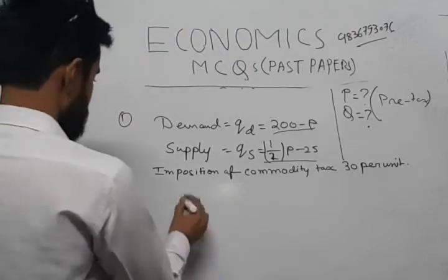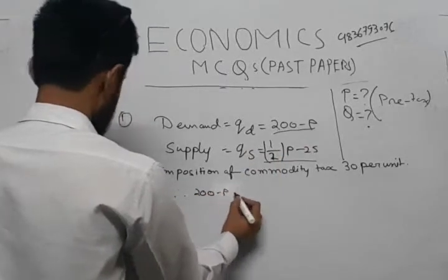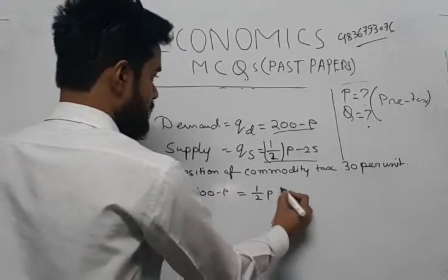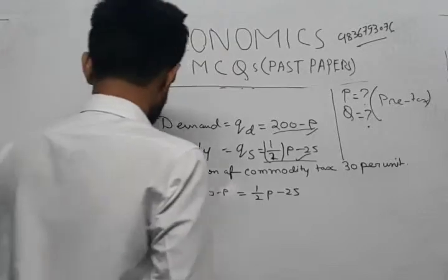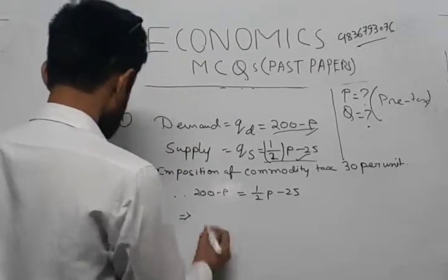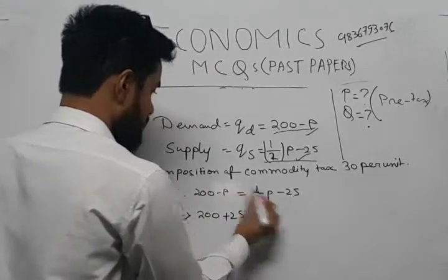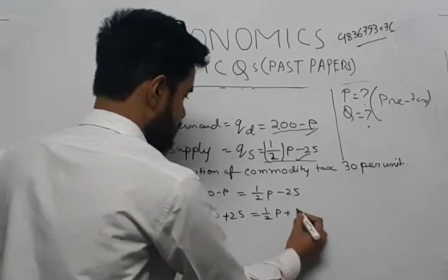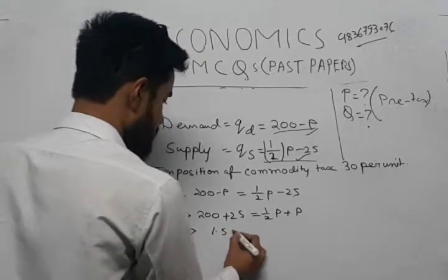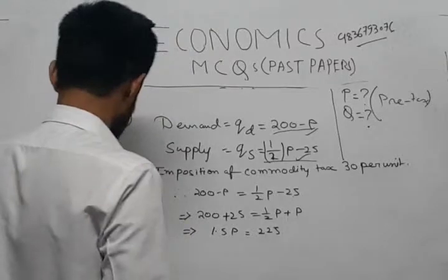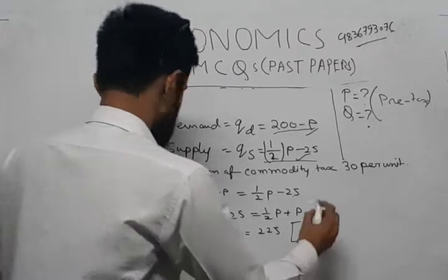Solving the equation: 200 minus P = 0.5P minus 25. Rearranging gives us 200 plus 25 = 0.5P plus P, which gives 1.5P = 225.